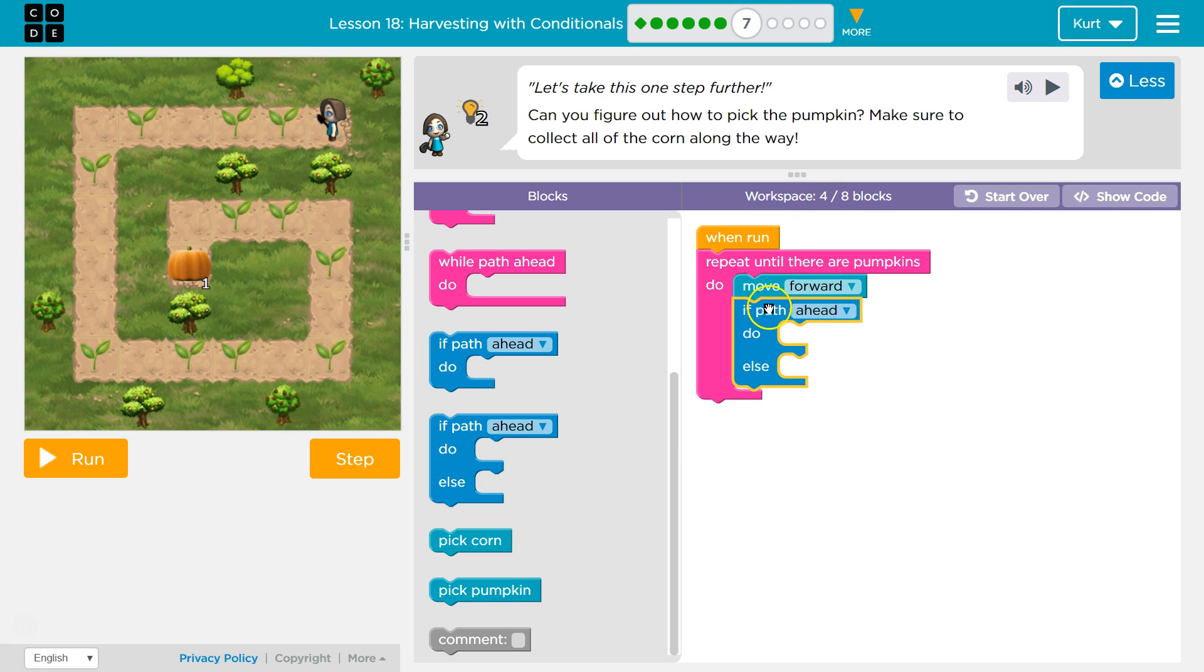So, before I move forward, I should check that the path is there, so I don't run off of it. So, if path ahead, move forward. Which way would I want to turn if it's not? Right? I'm going to want to turn left.